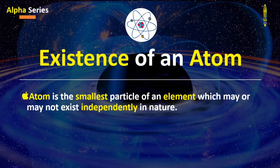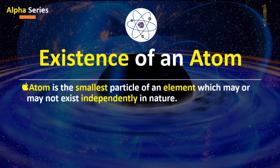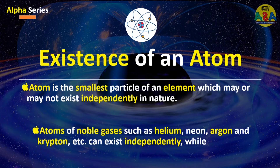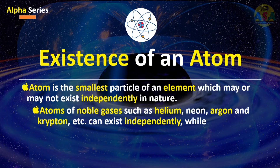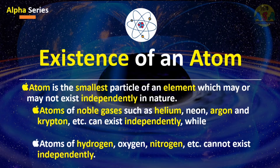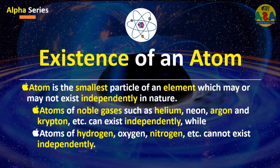Existence of an atom: An atom is the smallest particle of an element which may or may not exist independently in nature. For example, atoms of noble gases such as helium, neon, argon, and krypton can exist independently, while atoms of hydrogen, oxygen, nitrogen, etc. cannot exist independently.